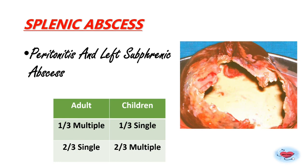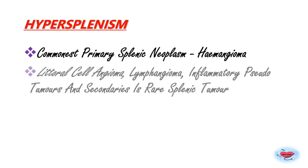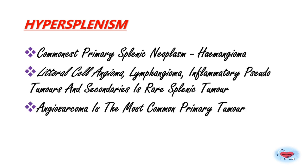Hypersplenism is overactivity of the spleen causing pancytopenia with a hypercellular bone marrow. Causes include portal hypertension, infections, primary hypersplenism, schistosomiasis, tuberculosis, and myeloproliferative disorders; it often requires splenectomy. Regarding splenic tumors, the commonest benign primary splenic neoplasm is hemangioma, while angiosarcoma is the most common primary malignant tumor. Other tumors like littoral cell angioma and lymphangioma are rare, and secondaries are very rare.